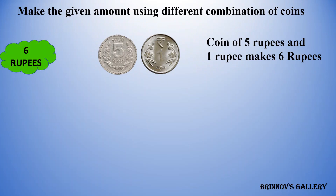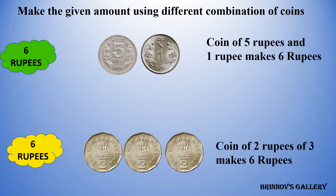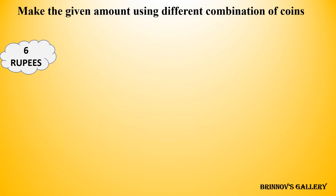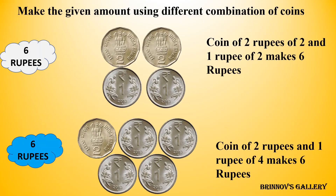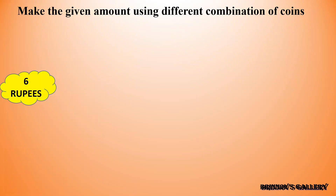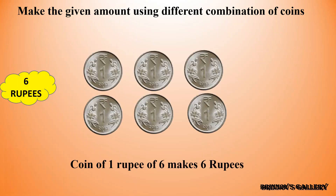6 Rupees: coin of 5 Rupees and 1 Rupee makes 6 Rupees. Coin of 2 Rupees, three of them, makes 6 Rupees. Coin of 2 Rupees, two of them, and coin of 1 Rupee, two of them, makes 6 Rupees. Coin of 2 Rupees and coin of 1 Rupee, four of them, makes 6 Rupees. Coin of 1 Rupee, six of them, makes 6 Rupees.